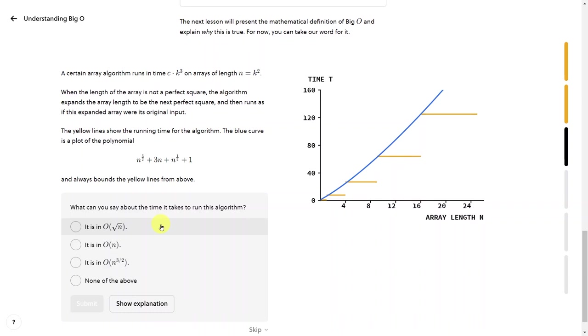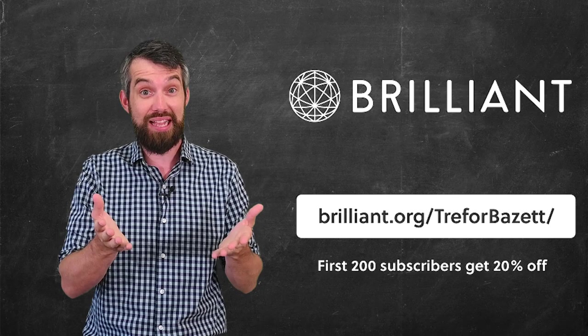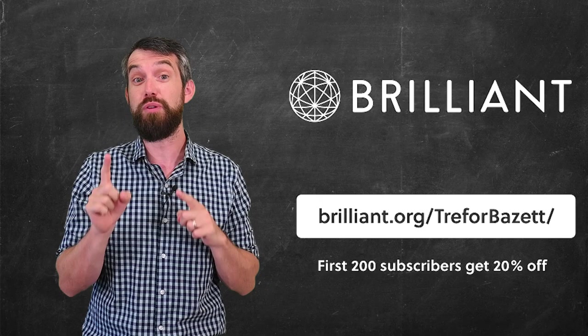So definitely go to Brilliant.org slash Trevor Bazit, the link is down in the description, and sign up for free. And also, the first 200 people that go to that link are going to get 20% off an annual premium subscription.